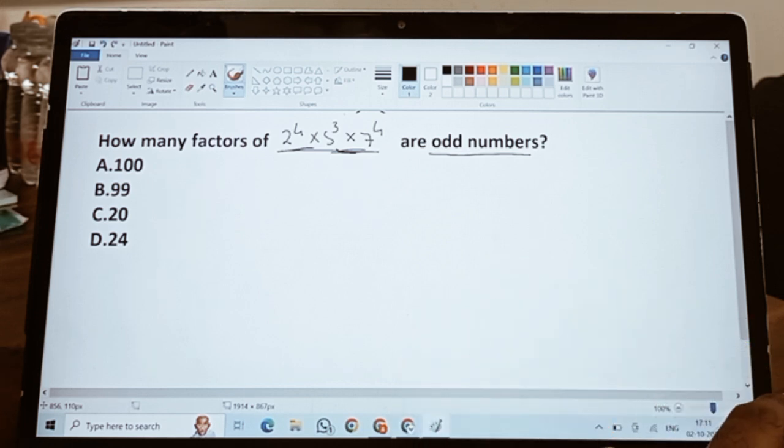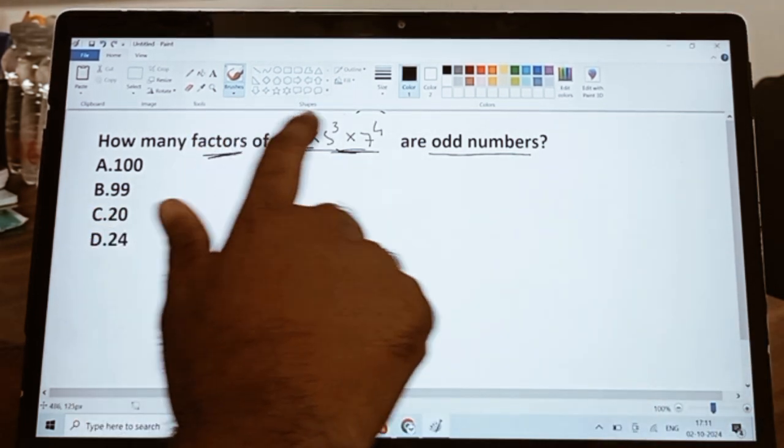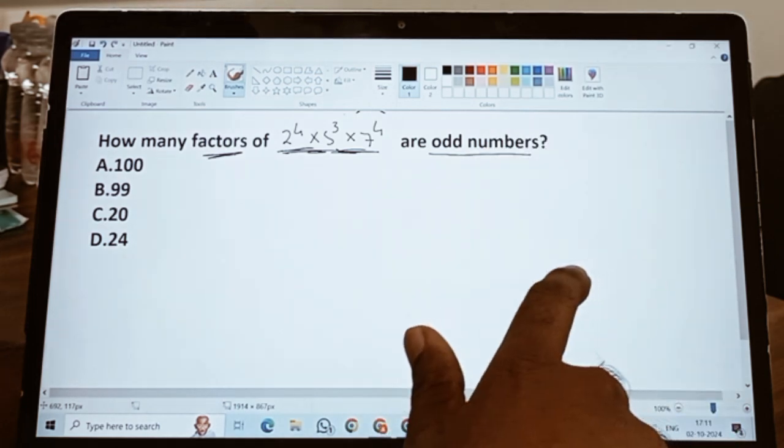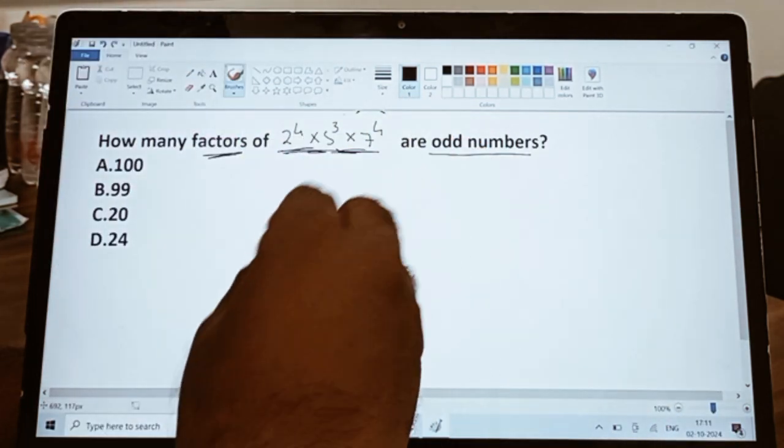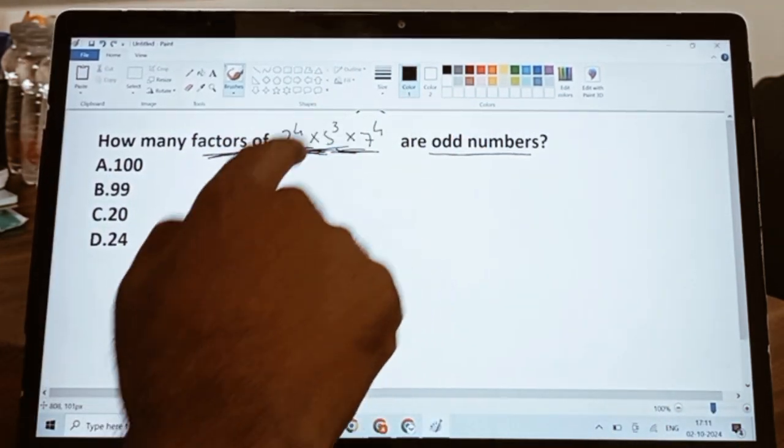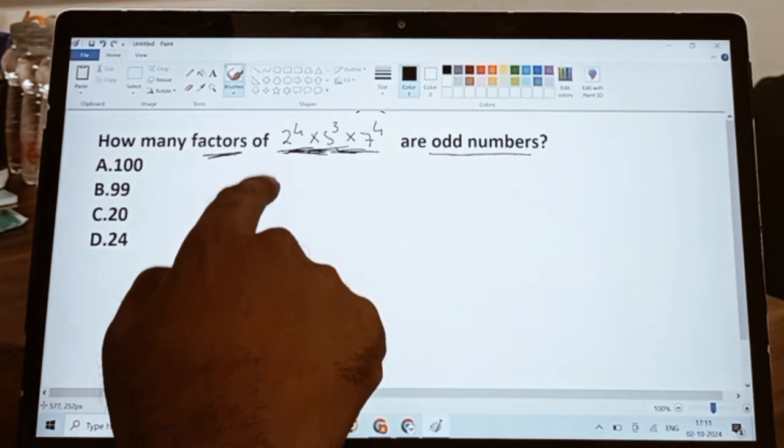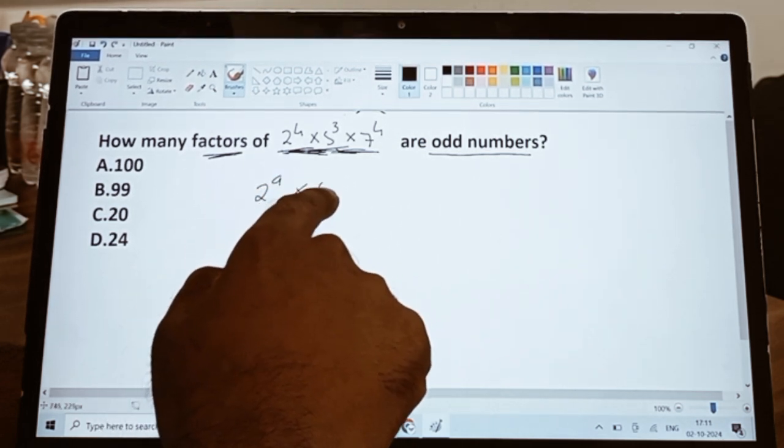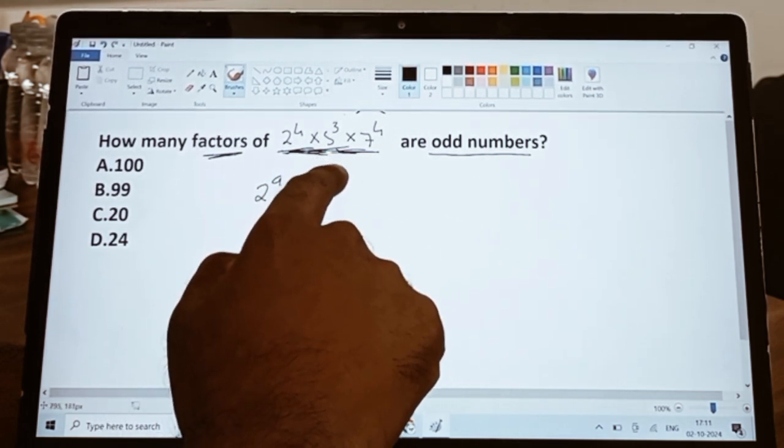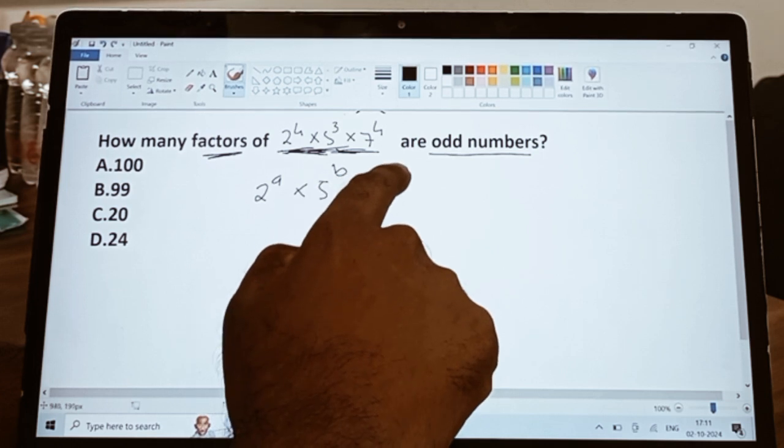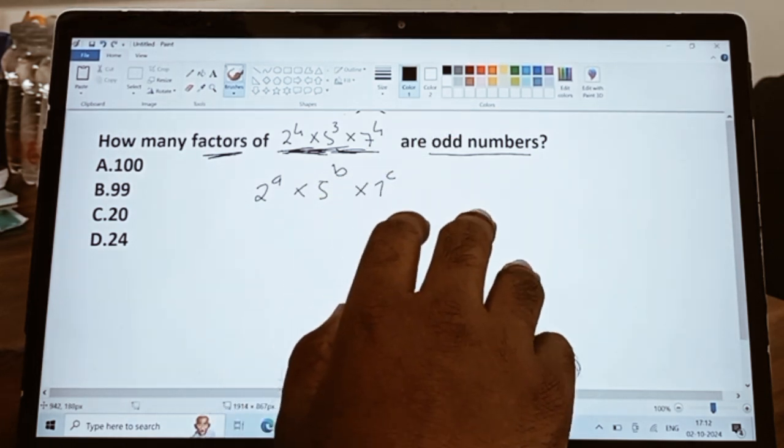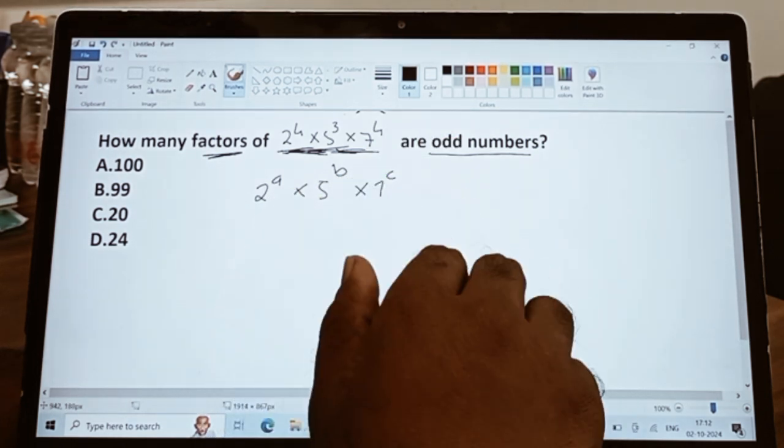The question is how many factors of this number are odd numbers. Now, any number which is supposed to be a factor of this particular number must be in the form of 2^a × 5^b × 7^c. Now this is the general form of any factor which is supposed to be a factor of this number.